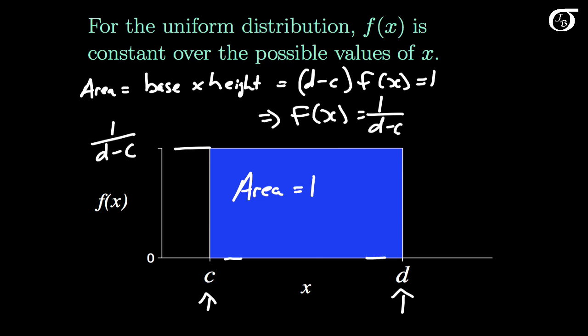Suppose we wanted to find the median of this distribution. Well, the median is simply the value of the variable that splits the distribution in half, with half the area to the left and half the area to the right. For the uniform distribution, that is simply going to be the midpoint between c and d.